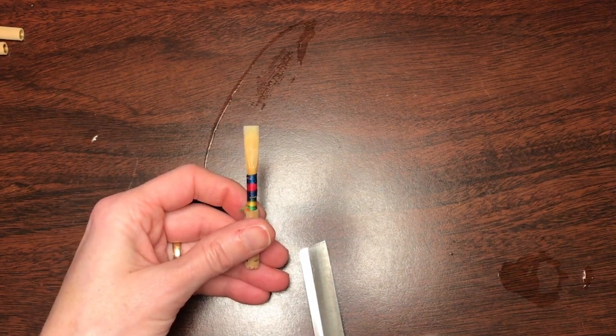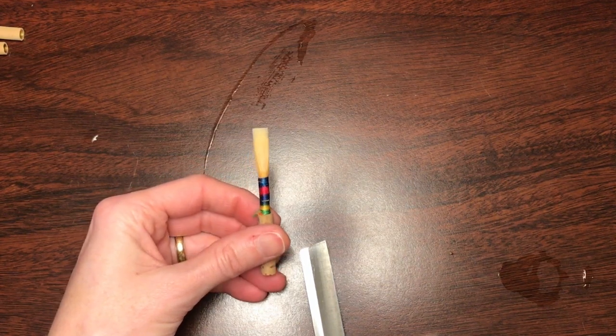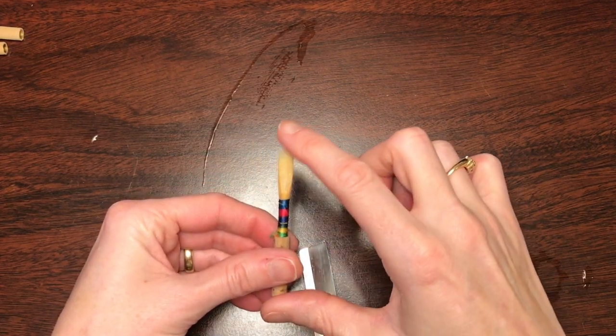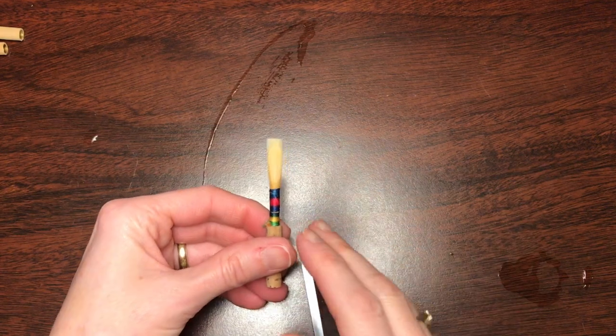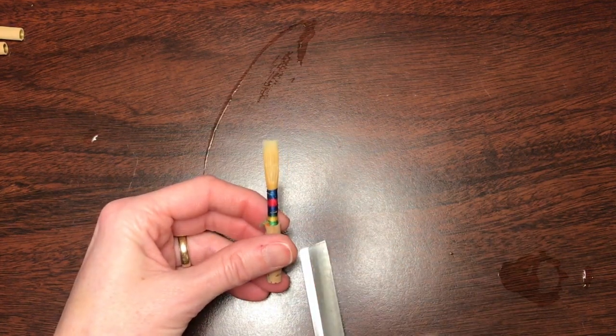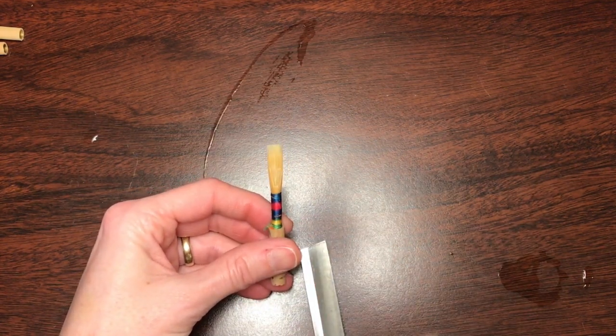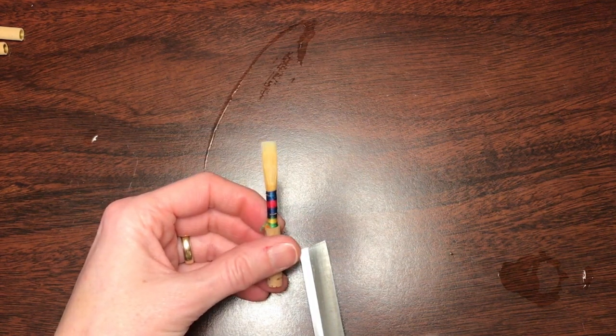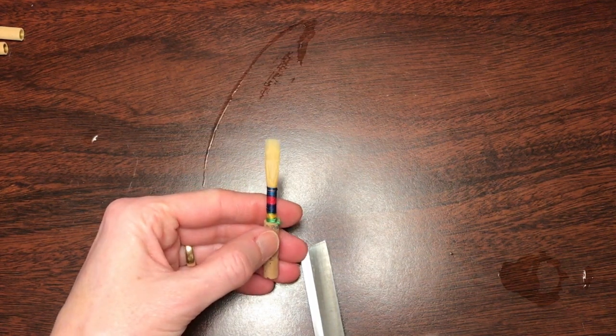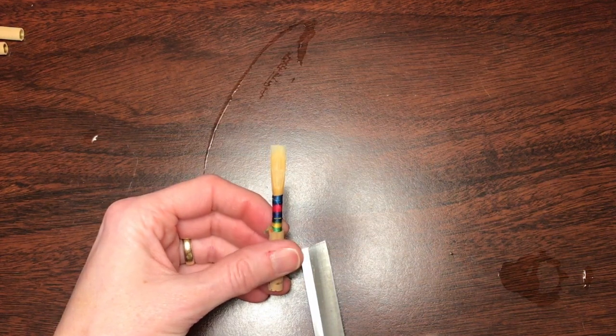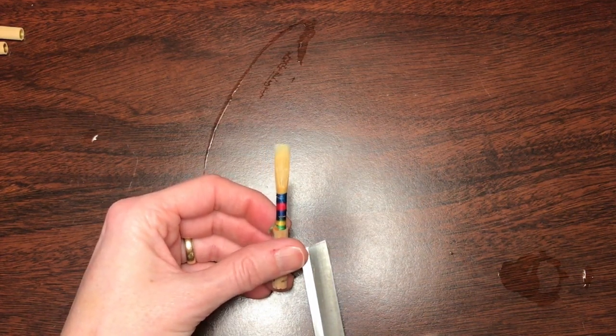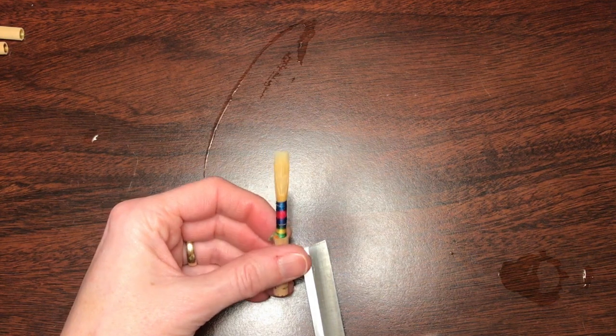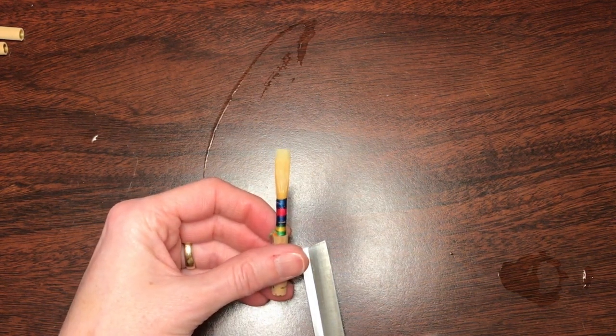A little while ago, Beth asked me, because we shorten the tip length in the lower blade, the blade that goes right into the mouth, should we also lower the heart on that side? And because I had a reed right here that I was working on just now in this hotel room that is sort of backwards from what I would normally want, I thought I could use it as an example.